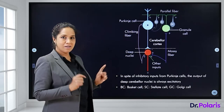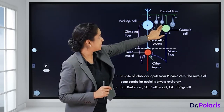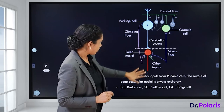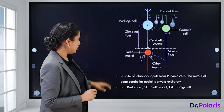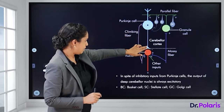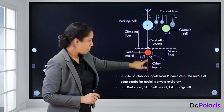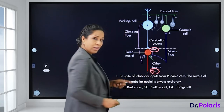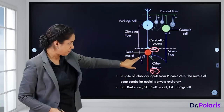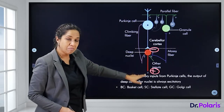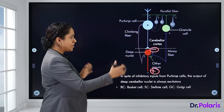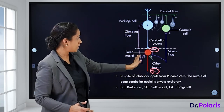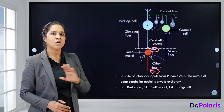An important point: the Purkinje cell has an inhibitory influence over the deep cerebellar nuclei, shown by the minus sign. However, the output from the deep nuclei is always excitatory. So even though the Purkinje cell input is always inhibitory, the output from the deep nuclei is always excitatory.